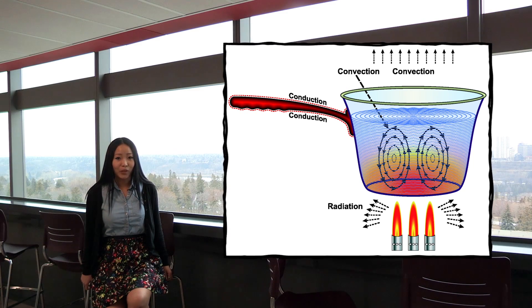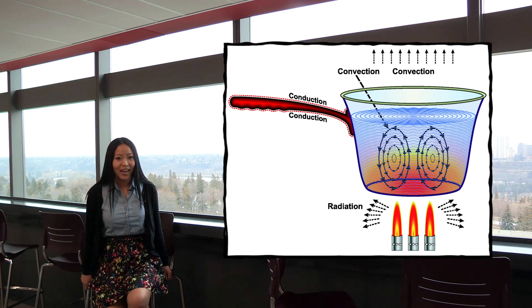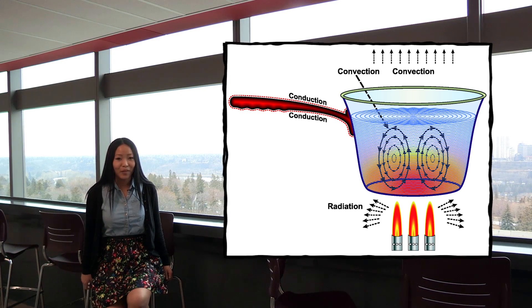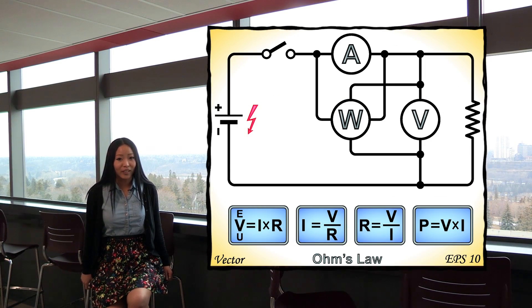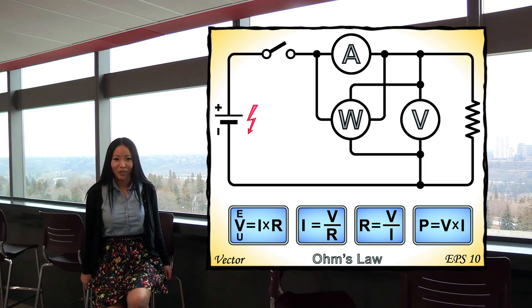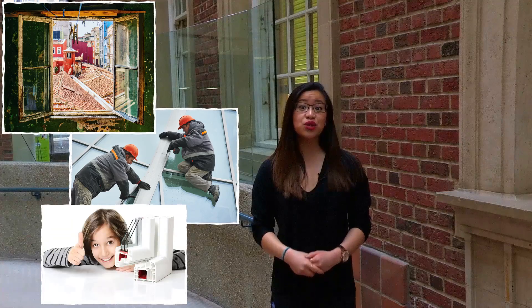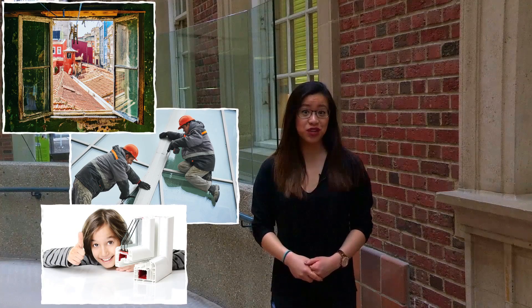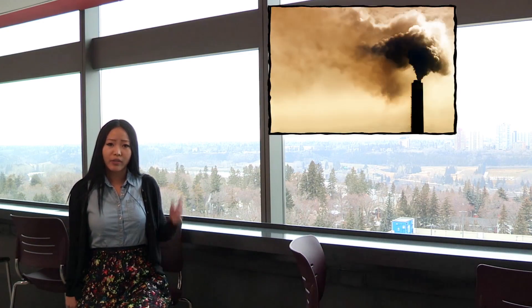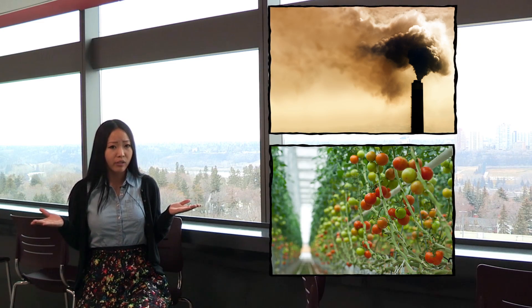We study various modes of heat transfer: conduction, convection, and radiation, and we learn how to model them. For instance, we use electric circuit analogy to model heat transfer in energy systems. Did you know double-paned windows reduce heat transfer two to three times more than single-paned windows? Is there any relation between the greenhouse effect and an actual greenhouse?